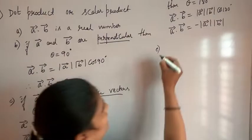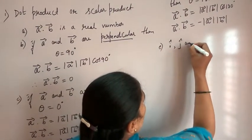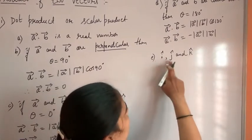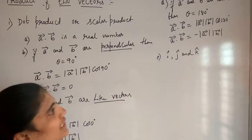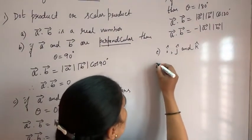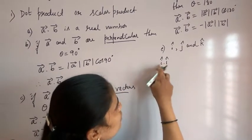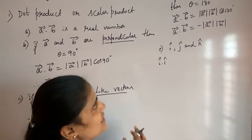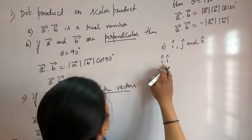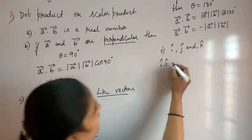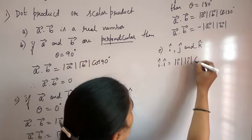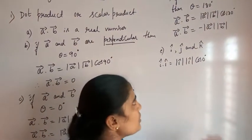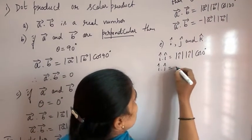The three basic unit vectors are i cap, j cap, and k cap, where i cap is along the x-axis, j cap is along the y-axis, and k cap is along the z-axis. Taking the scalar product: since i cap and i cap lie on the same axis, theta equals 0 degree, so i cap dot i cap equals magnitude of i cap into magnitude of i cap into cos 0 degree. Since i cap is a unit vector, its magnitude is 1. Therefore, i cap dot i cap equals 1.